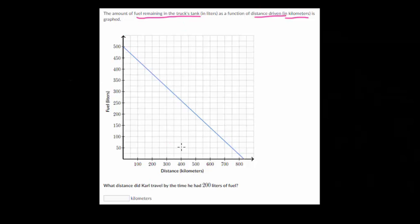It looks like our horizontal axis is the distance that's traveled. And the vertical axis is the fuel, or the fuel remaining in the tank, which again is in liters. And our distance is in kilometers.